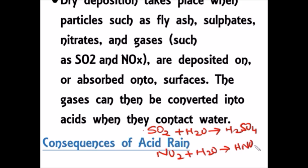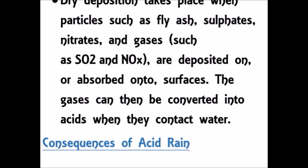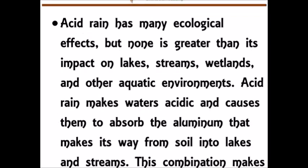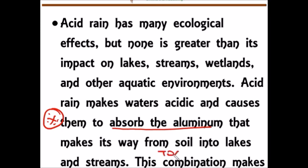Now let's discuss the consequences of acid rain — very important for the prelims examination. Acid rain has many ecological effects. It makes water acidic and absorbs aluminum from the soil. When aluminum reaches water bodies, it becomes toxic to crayfish, clams, fish, and other aquatic animals.